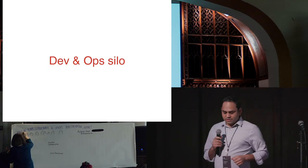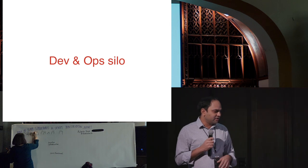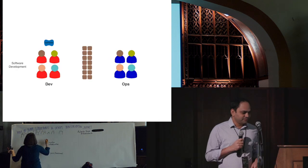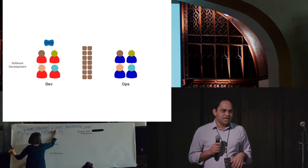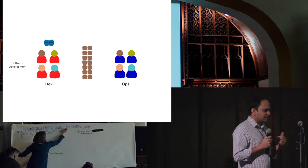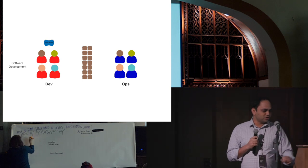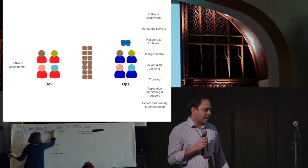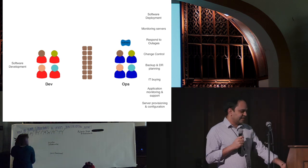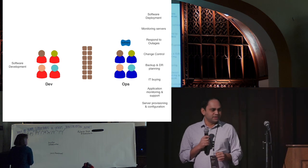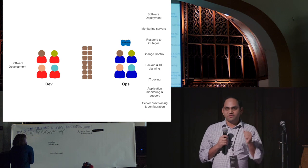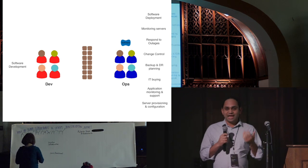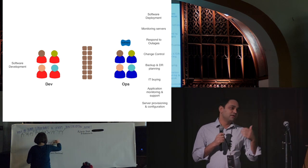Before I talk about dev and ops collaboration, a lot of you must be aware of dev and ops silos. Back in the day, you have dev, you have ops, and there's usually a huge wall in between. Developers write software and throw it over the wall to the ops side, celebrate the release, and then the ops team takes care of software deployment, monitoring servers, responding to outages, change control, and all those other things. If there is a production issue, they are the ones who look at it first, then take help from devs.